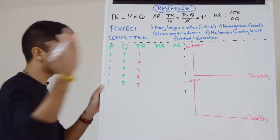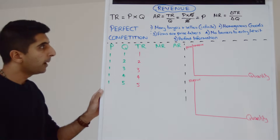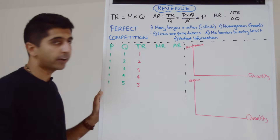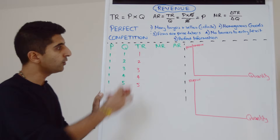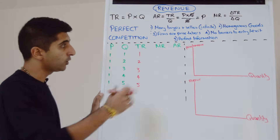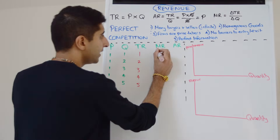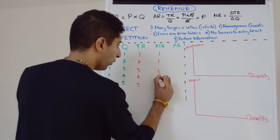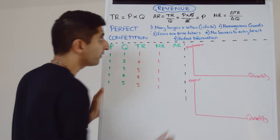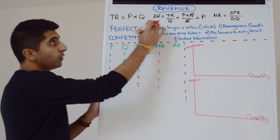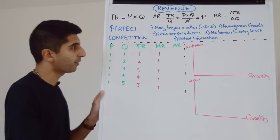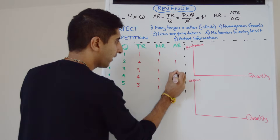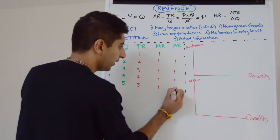So we say this is in pounds or dollars. Marginal revenue is the change in TR divided by the change in Q. The change in Q is always 1, so we're just looking at the change in TR, which in each case is 1. And average revenue — look at the trick — is just price, so that's going to be 1 as well.